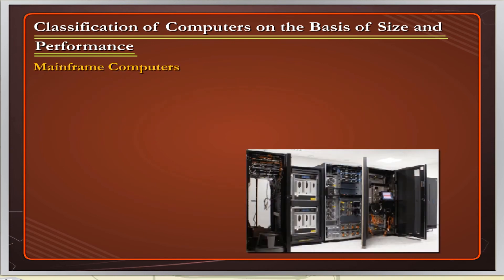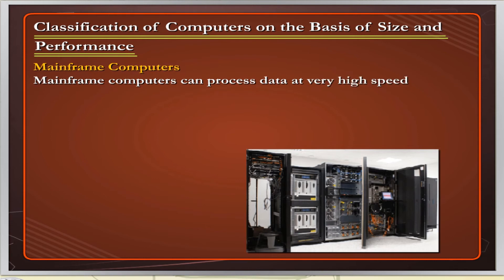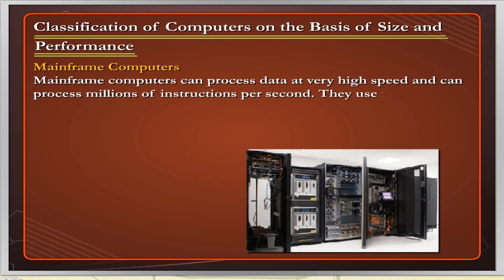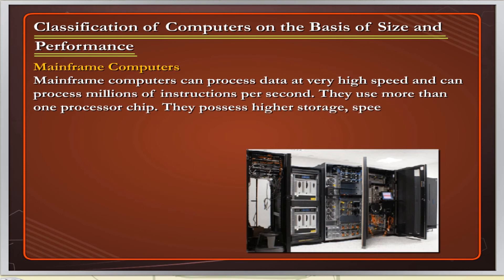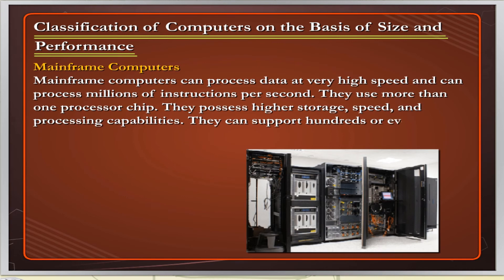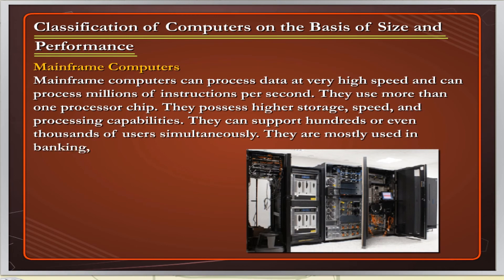Mainframe Computers can process data at very high speed and can process millions of instructions per second. They use more than one processor chip and possess higher storage, speed and processing capabilities. They can support hundreds or even thousands of users simultaneously. They are mostly used in banking, airlines, railways, etc.